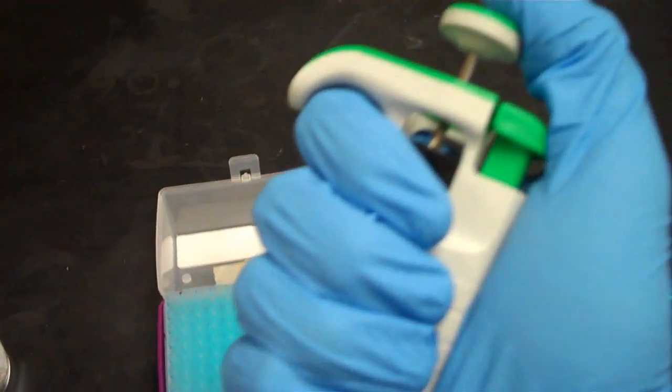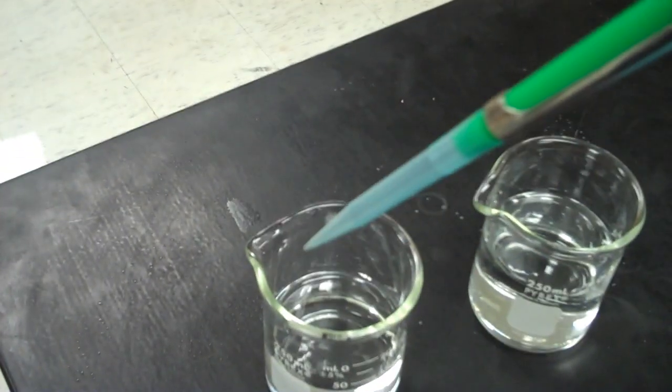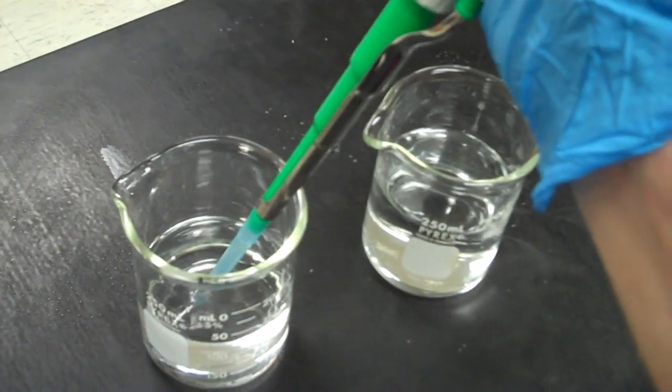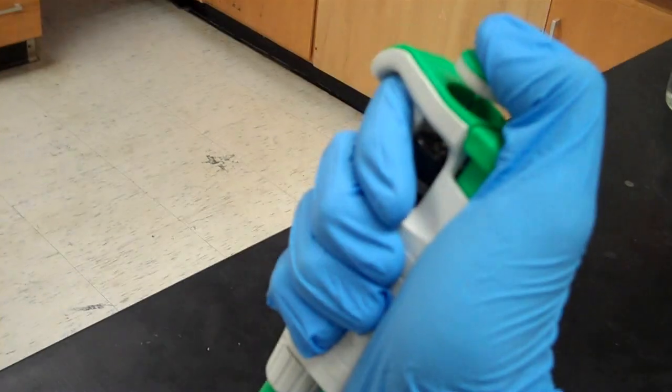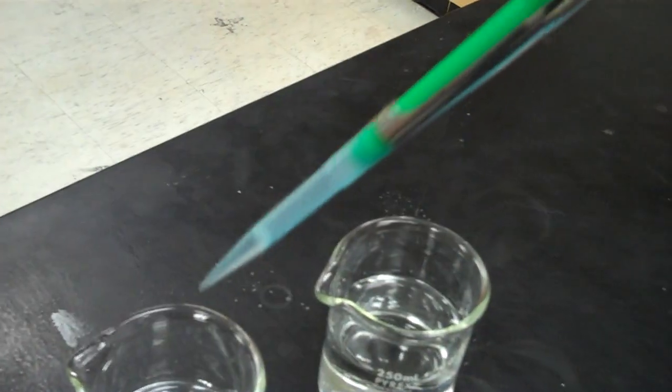Now in order to pipette, you must push the plunger down and hold it down with your thumb. Put the tip in the liquid making sure the actual pipette doesn't touch the liquid and slowly release the plunger, drawing the liquid up into the tip of the pipette.